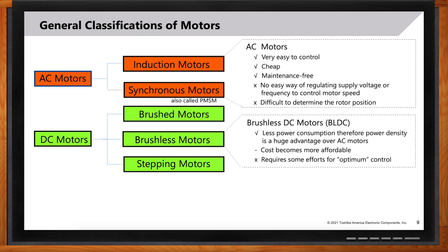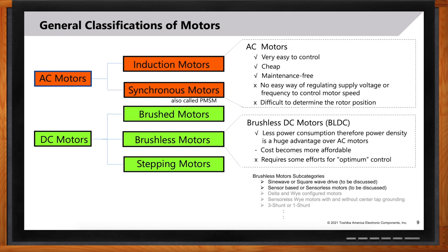Motors to which direct current is applied are called DC motors, which include brushed, brushless, and stepping motors. Both brushed and brushless motors can be used in similar applications, with cost and performance requirements determining the final choice. Brushless DC motors have less power consumption than AC motors, so their form factor can be smaller while having equivalent power density — a huge advantage. The cost is also coming down to an affordable level, with the only caveat being that controlling a brushless motor to its optimum requires some effort.